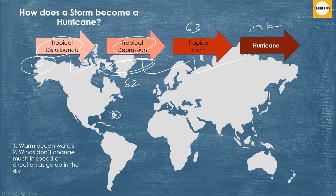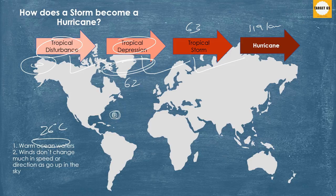Scientists don't know exactly why or how a hurricane forms, but they do know that there are two ingredients needed. One ingredient is warm ocean waters — warm ocean waters provide the energy a storm needs to become a hurricane, and usually the surface water temperature must be 26 degrees Celsius or higher. The other ingredient is winds that don't change much in speed or direction as you go up in the sky, because winds that change a lot with height will split the storm apart.